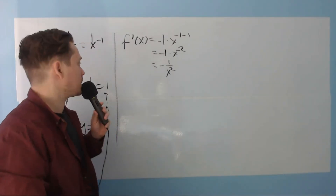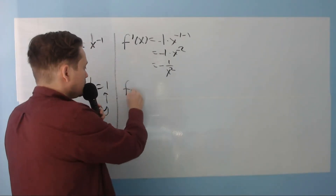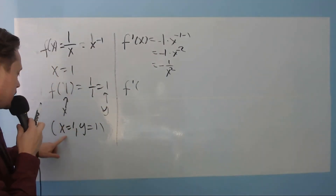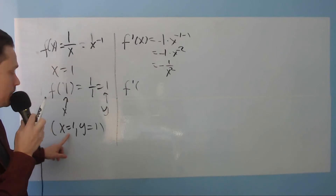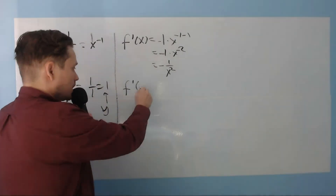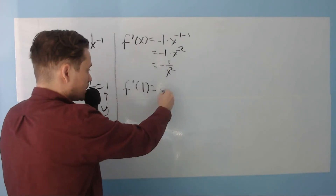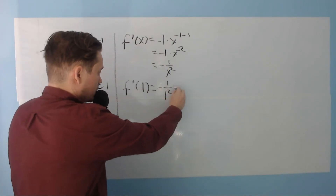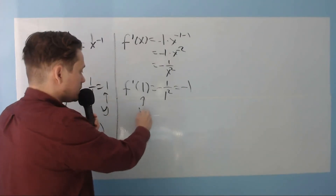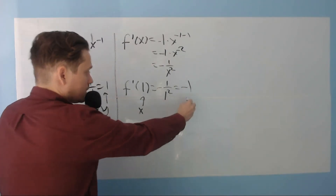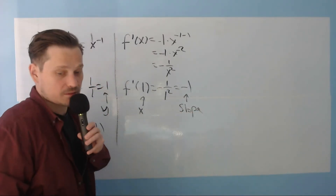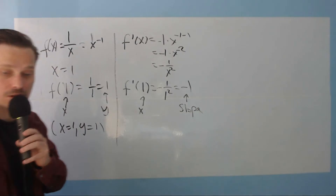Once you have that, evaluate the derivative at x equals 1. f prime of 1 gives negative 1 over 1 squared, which is just negative 1. In this context, that value is the slope — that's what the derivative represents at a particular value of x.